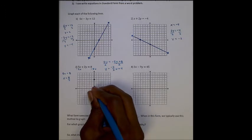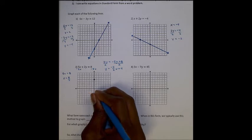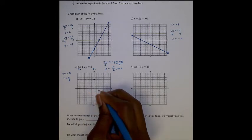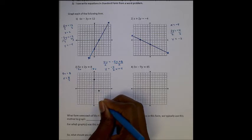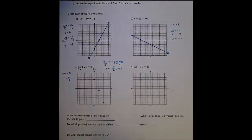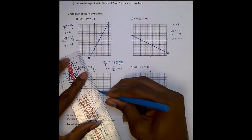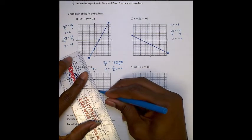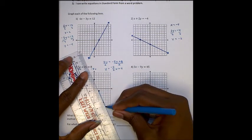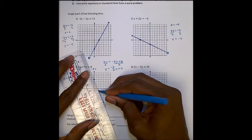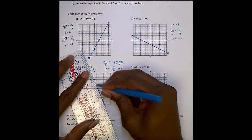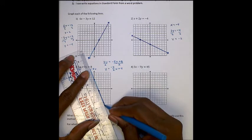Now this is slope-intercept form. I always start with my intercept, which is 4. 1, 2, 3, 4. And then my slope tells me go down 5, go right 2. 1, 2, 3, 4, 5. Right 1, 2. Do that again. 1, 2, 3, 4, 5. Right 1, 2. And now here's my line. So a little bit of bump in the road there because my standard form didn't work, but we're there.